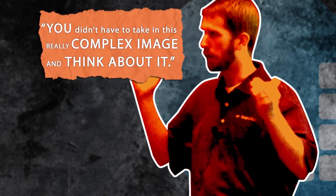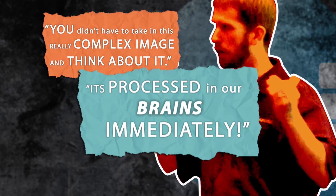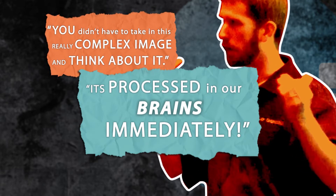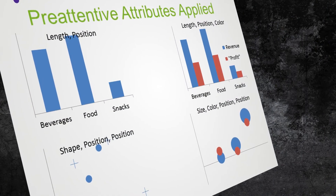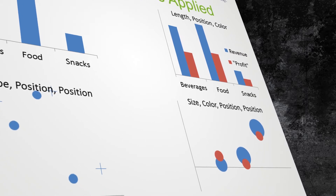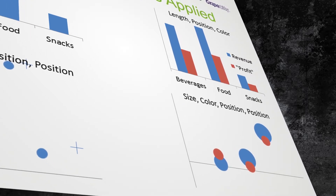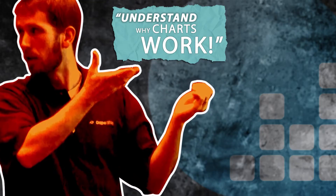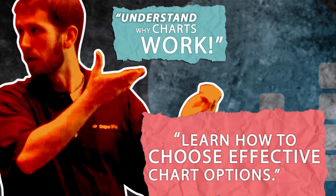There's a series of pre-attentive attributes that are really important. One is shape — shape is an example of a pre-attentive attribute. You see it automatically; you don't have to take in a complex image and think about it, because it's processed in our brain immediately before we become conscious. We have size, like the size of circles in a bubble chart. Position — just like a chart with two axes. And then we have color. This is how pre-attentive attributes work in charts, and this is why charts work. That's why you understand them — you don't have to process them.